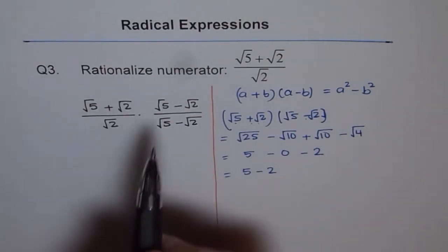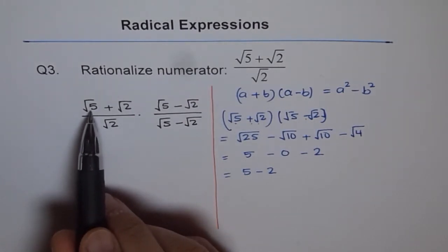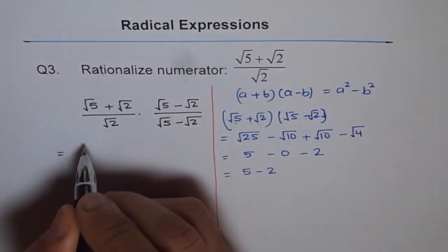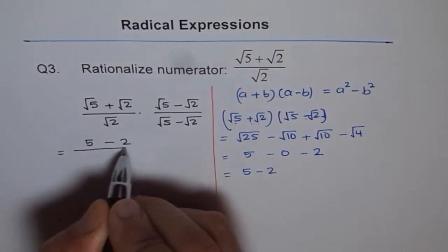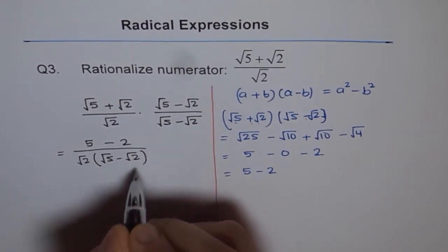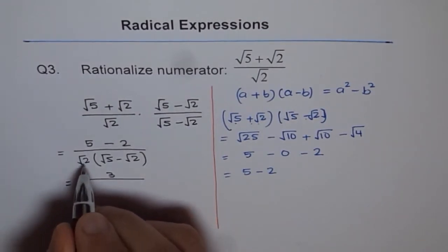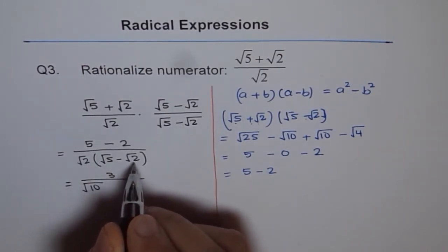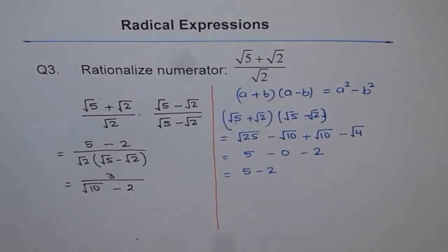When you multiply by the conjugate, you get rid of the radical. We can write this as square root 5 times square root 5 gives square root 5 squared, which is 5, minus square root 2 squared, which is 2, over square root 2 times square root 5 minus square root 2. And 5 minus 2 is 3, so we get 3 over square root of 10 minus square root of 4, where square root 4 is 2.